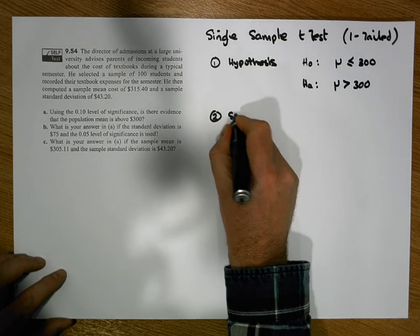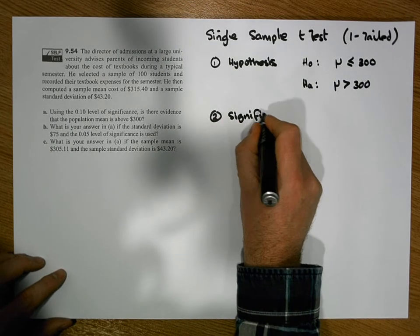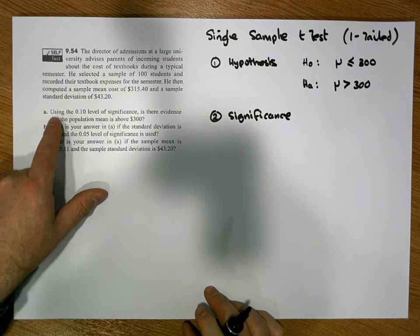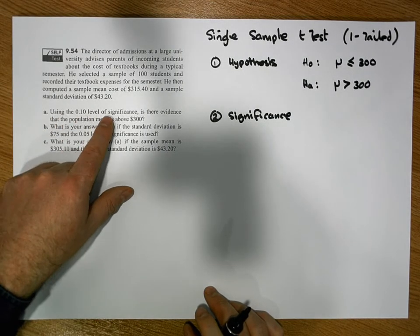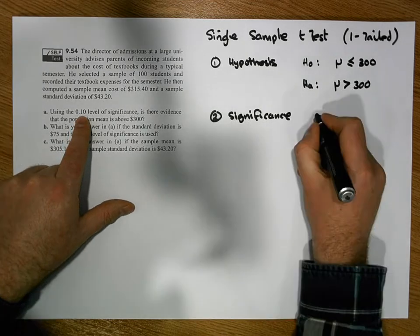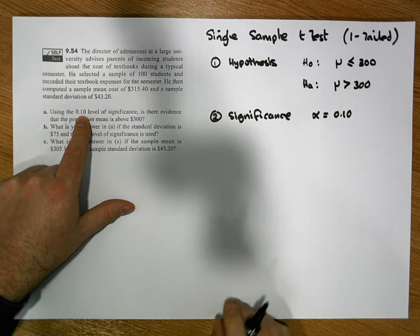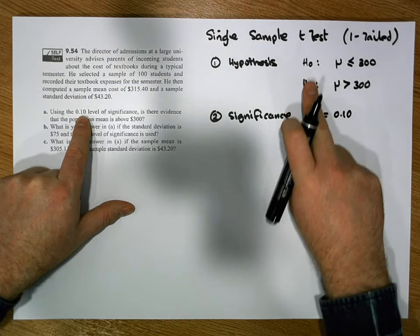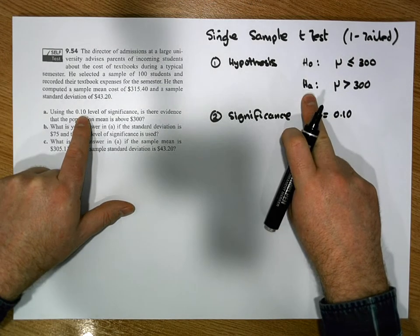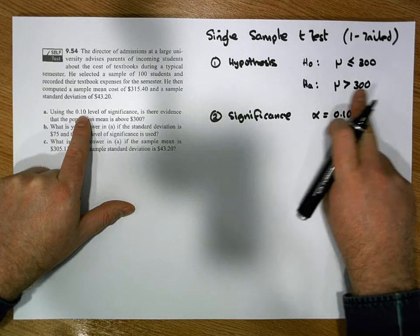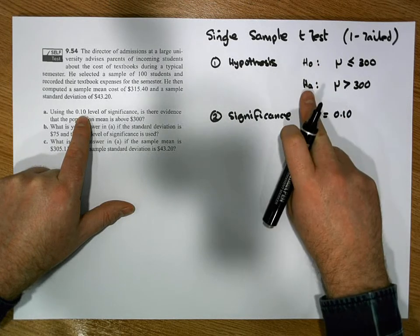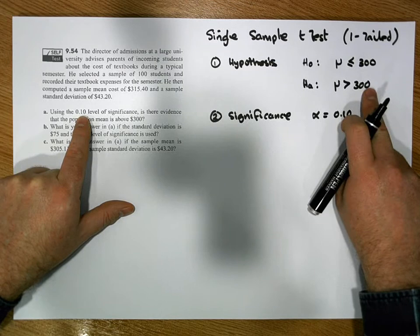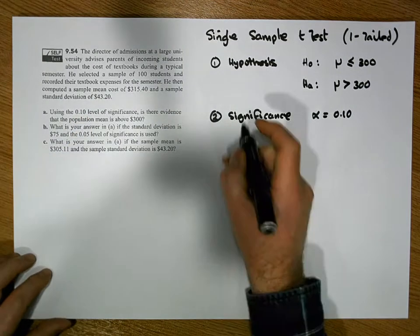Step two is to set our significance level. This has been given in the question: alpha is equal to 0.10. Keep in mind this is a one-tailed test because we are specifying a direction with respect to the alternative hypothesis.